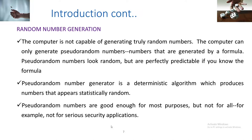A pseudo-random number generator is a deterministic algorithm which produces numbers that appear statistically random. However, pseudo-random numbers are not always suitable — for cryptographic or security applications, if you can predict the numbers, you can also predict the output of the algorithm. So normal pseudo-random numbers are not preferable for such applications.